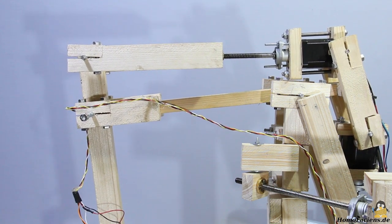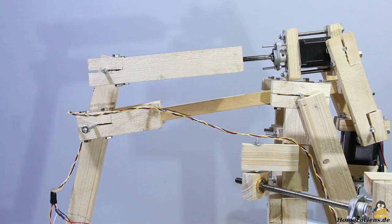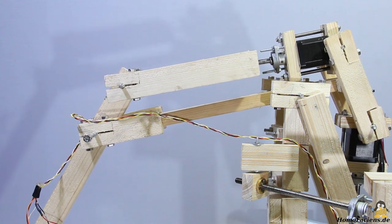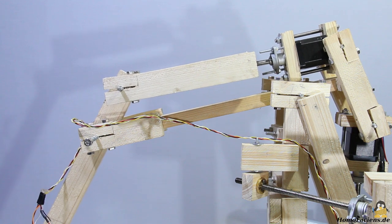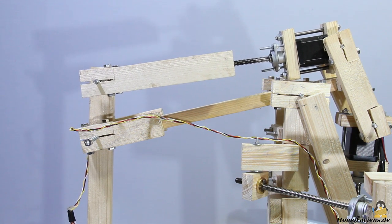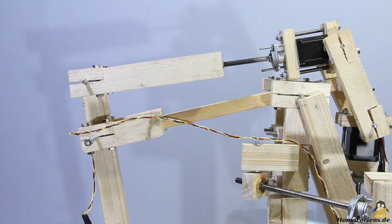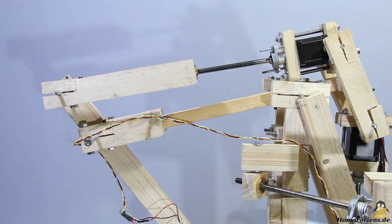The overall transmission ratio of the drive is ruled by the pitch of the spindles and the distance between the pivot point of the joint and the fastening point of the spindle. The closer it is to the pivot point, the faster the robot arm can move, the further away, the more precise and powerful the movement becomes. The joints can rotate a maximum of about 100 degrees.